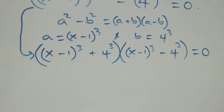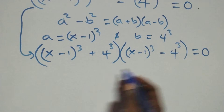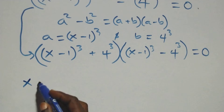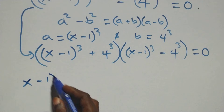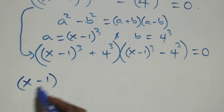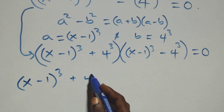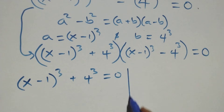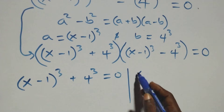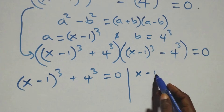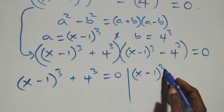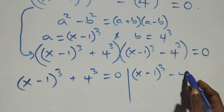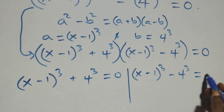Then the next step: we have two possible cases. The first one is (x minus 1) raised to power 3 plus 4 raised to power 3 equals 0, or we have (x minus 1) raised to power 3 minus 4 raised to power 3 equals 0.